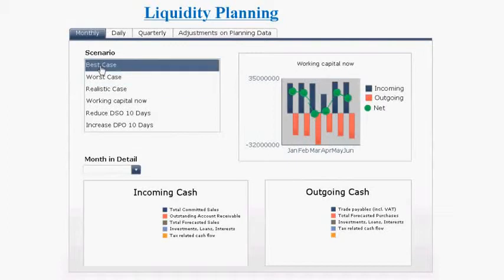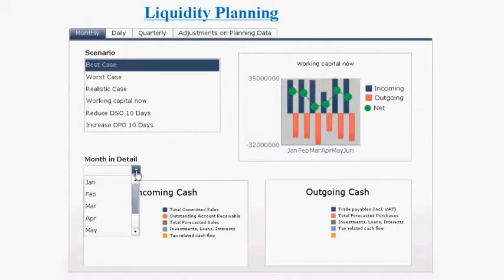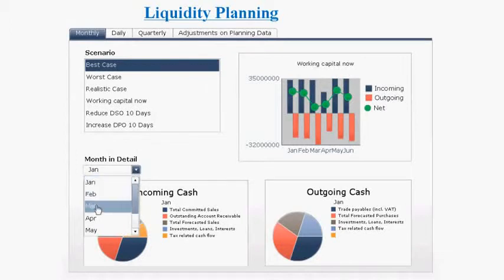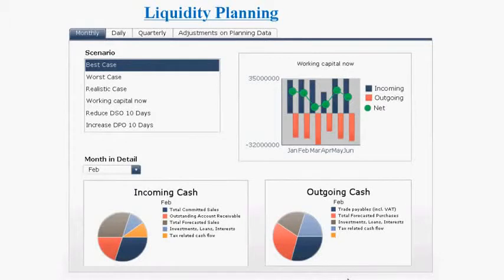Next he looks at the best case scenario, which shows a positive net cash flow. Using the month-in-detail view, he analyzes the details of the incoming and outgoing cash. It's easy to select any month of interest and see what's changed with respect to the mix of liquidity-relevant items such as committed sales, receivables, payables, and forecasted purchases.